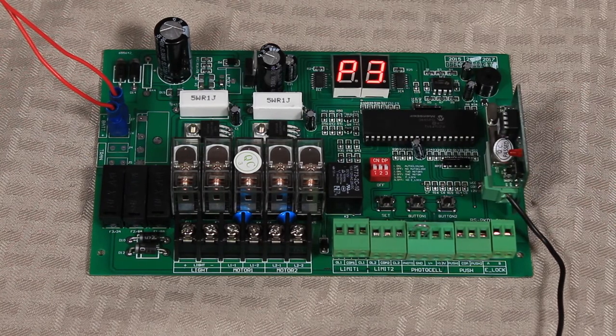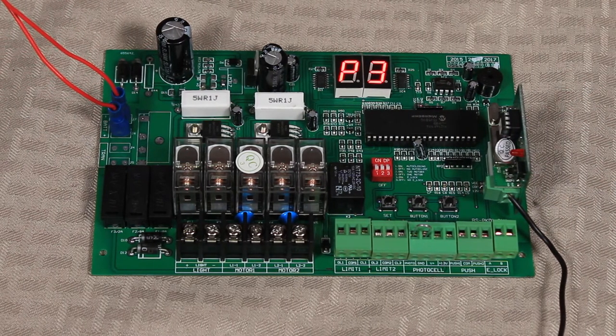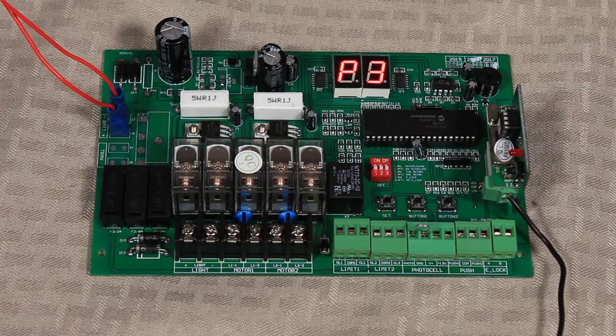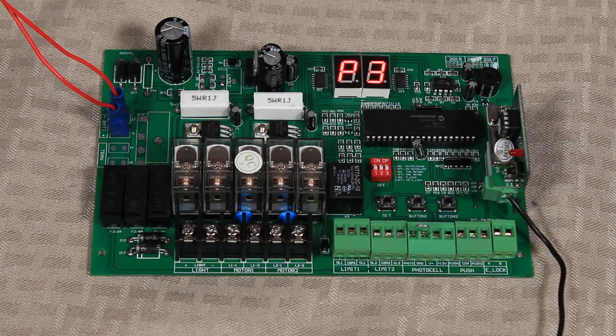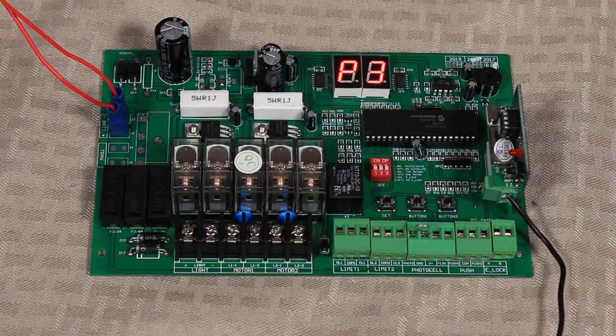We're going to press the Set button again and go to P3. The P3 setting is how much force the gate operator will apply during operation in order to operate the gate. What you want to do to set the setting is set it at the max, which is 32.